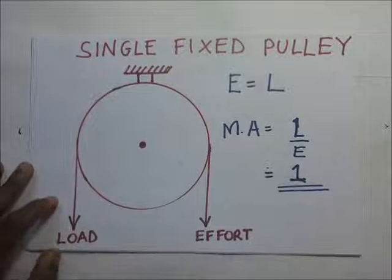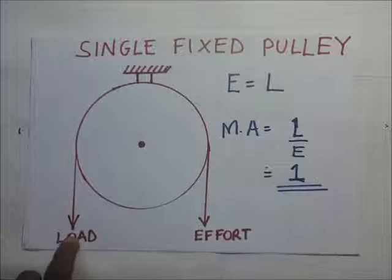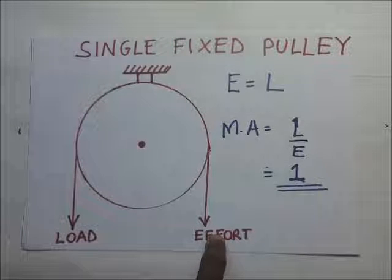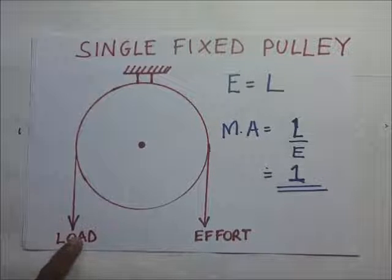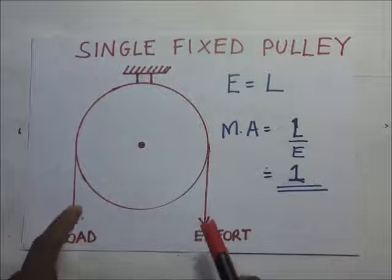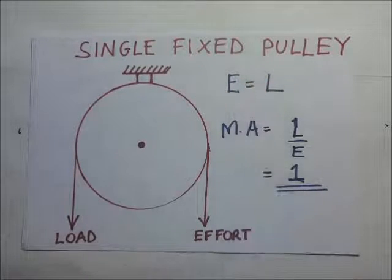Now the dynamics here are such that if the load you are pulling is 50 newtons it means you are going to need 50 newtons to pull it up. Likewise, if you are having a load of 100 newtons, the effort you need is 100. So it means as far as the single fixed pulley is concerned the effort is equal to the load.